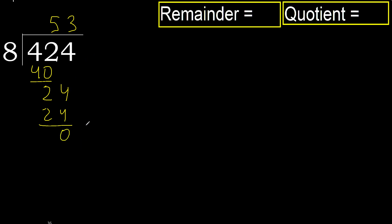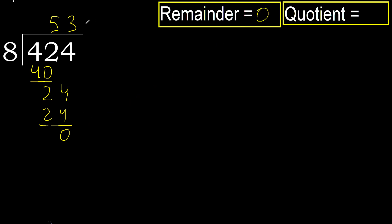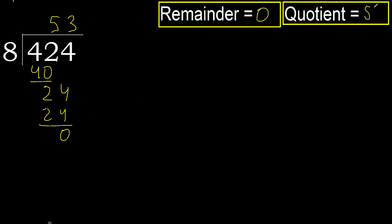There is no next number, therefore we finish. 424 divided by 8 is 53.